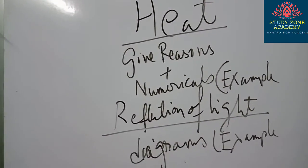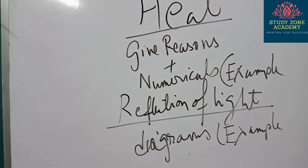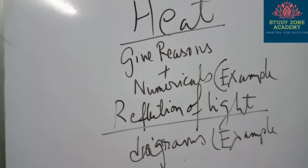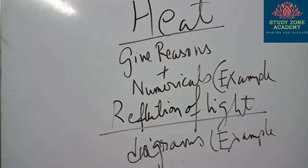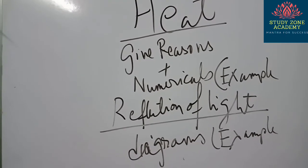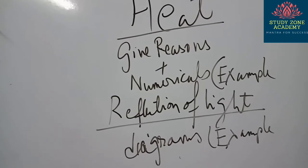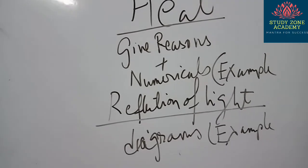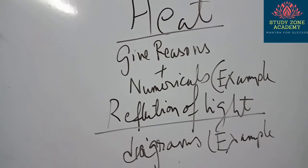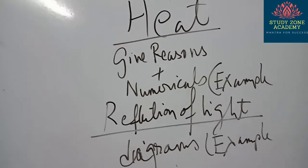Next is heat and reflection of light. From reflection of light, the diagrams from the examples are very important. From heat, give-reason questions and numericals — if you do the numericals from the examples, it will also cover the exercise sums because similar sums appear in the exercise.